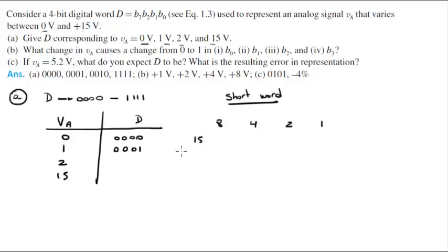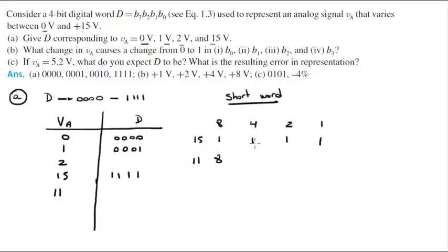You have to reach 15 eventually. So 15 is: 8 yes, 8 plus 4 is 12, plus 2 is 14, plus 1 is 15. Now, just to clarify this technique, let's do 11. If you want to build 11: 8 yes, but 4 will make it 12 so 4 is 0, 2 will make it 10 so yes, and 1 will make it 11. So 11 will be 1,0,1,1.